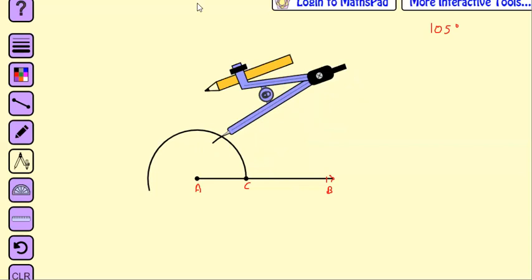Before even looking at that, for 105, your step 1 is 60 degree, step 2 is 120, step 3 is 90, then step 4, 105, isn't it? This is the procedure? Yes, sir.